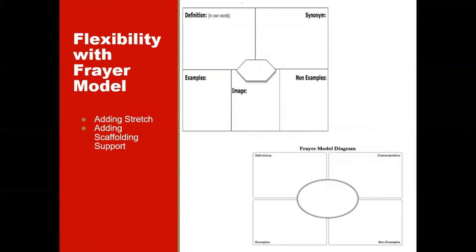Although the Freyer model standard is the definition, image, example, and non-example, it can be modified for the needs of the students. The extension shown at the top of this slide would be for advanced students — adding synonyms and/or antonyms will extend students' thinking. The standard Freyer model can easily be adapted to include pictures or icons for students who need additional support. Teachers should provide explicit instruction for those students who need information broken down into smaller, more manageable chunks, as well as modeling and guiding practice to effectively use this organizer to learn new concepts.